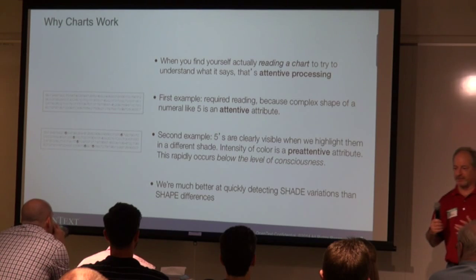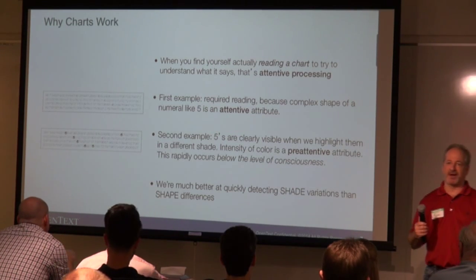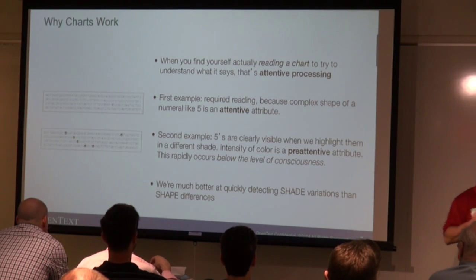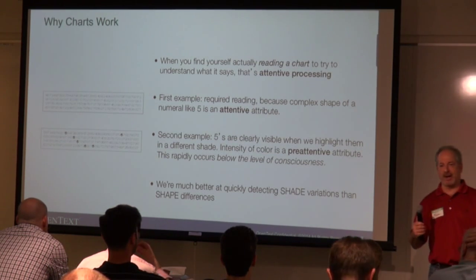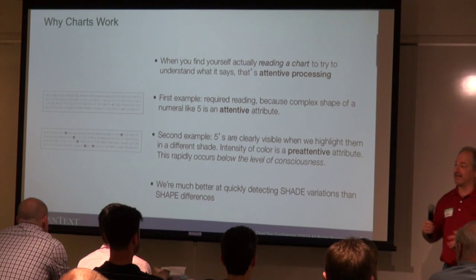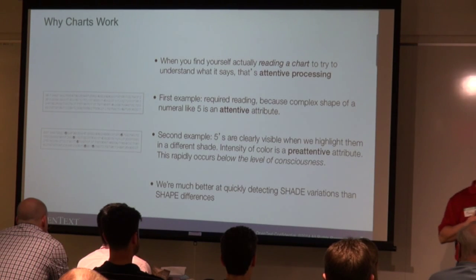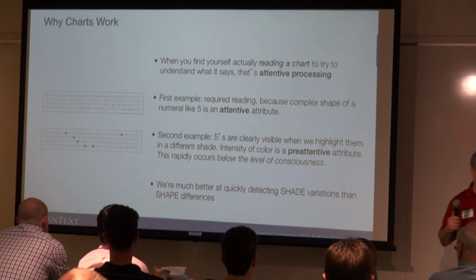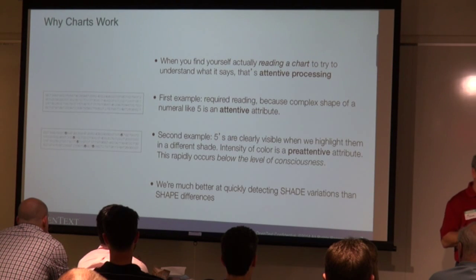We're going to talk about the difference between attentive processing and pre-attentive processing. Attentive processing is when I have to pay attention, look for what I'm looking for, and then try to understand it. Whereas pre-attentive processing is where I see things immediately. The first example with complex shapes is an attentive attribute. The second example — highlighting, which is shade intensity of a color — is a pre-attentive attribute. We're much better at detecting shade than we are at shapes.